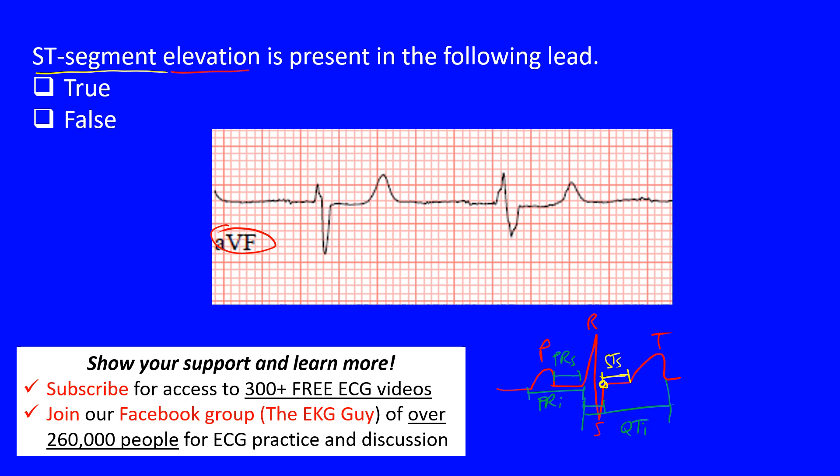To determine if it's elevated or not, we use a baseline. More recently we use the PR segment as that baseline rather than the TP segment. We then look at the J point and assess for elevation or depression relative to that baseline.